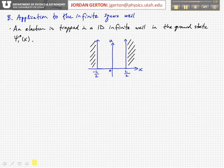And now we're going to apply this to the simple case of an infinite square well. We imagine that an electron is trapped in a one-dimensional infinite well in the ground state psi 1, that's the initial state.